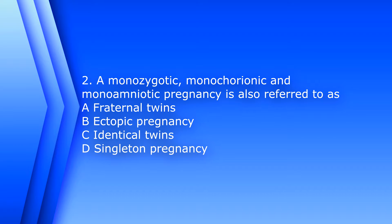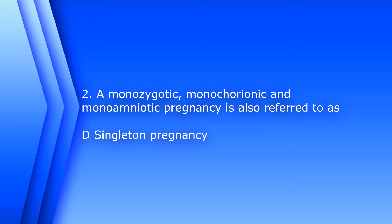Question 2. A monozygotic, monochorionic, and monoamniotic pregnancy is also referred to as: A. Fraternal twins. B. Ectopic pregnancy. C. Identical twins. Or D. A singleton pregnancy. The answer is D. Singleton pregnancy.